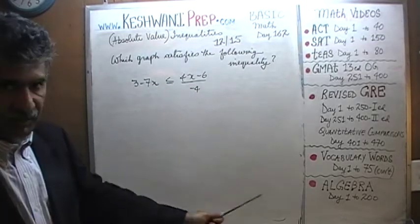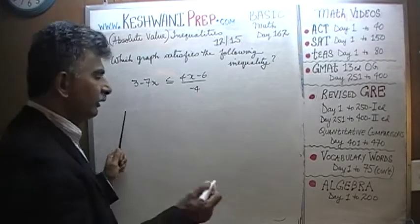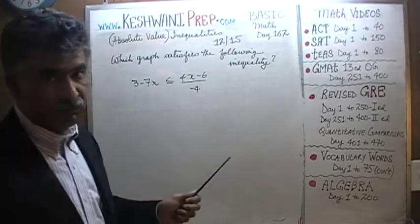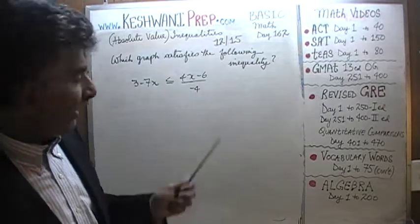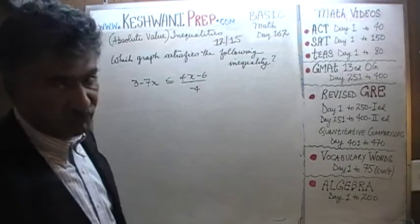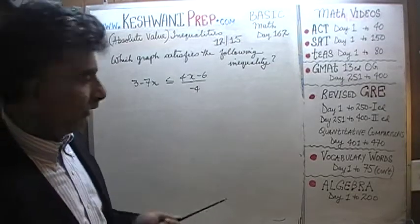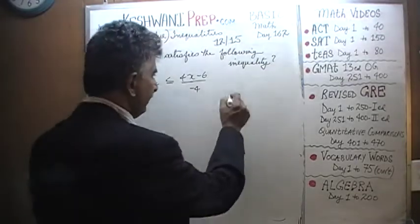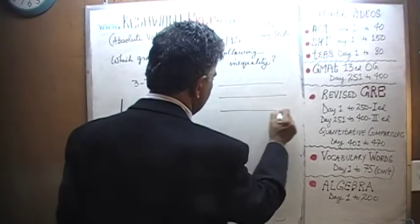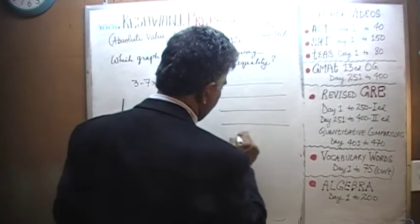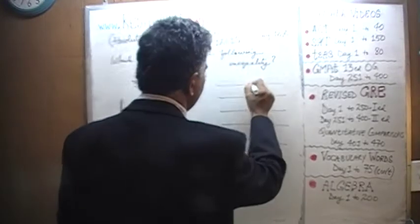There are five graphs that are going to be given to us, and our job is to identify one graph that satisfies this inequality. Here are the answer choices: one, two, three, four, five.